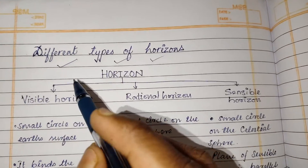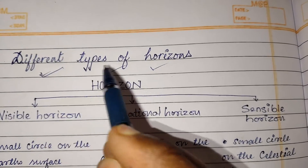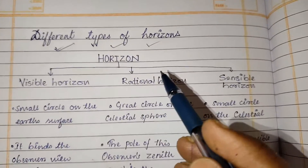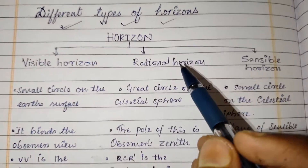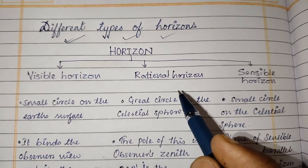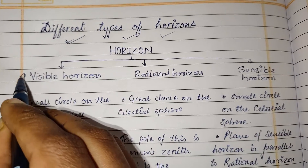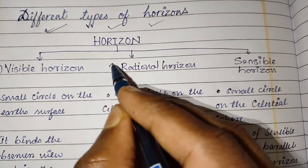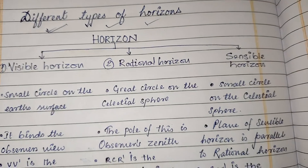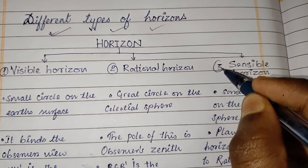Hello and welcome. In this video I am going to discuss about different types of horizons. Horizon is divided into three types: first is visible horizon, second is rational horizon, and third is sensible horizon.